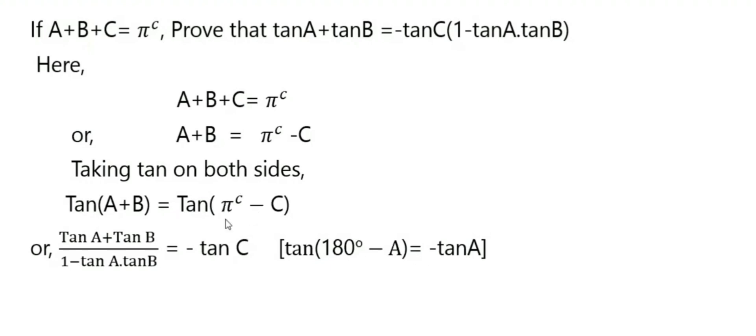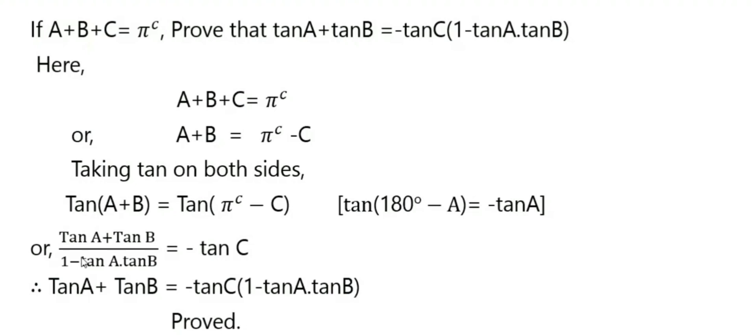So tan(180° - C) is -tanC. Now we are going to cross multiply it. When you cross multiply, we'll have tanA + tanB on one side, and we have -tanC multiplied by (1 - tanA·tanB). Hence we proved it. Thank you so much.